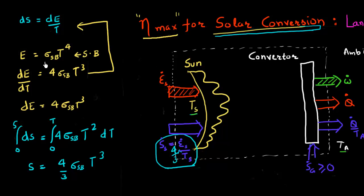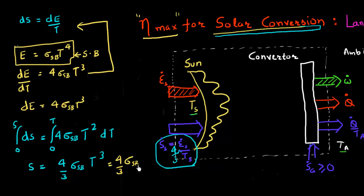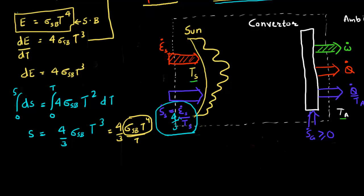Now I can relate it back to the energy. I know that the energy is E = σT⁴. Plugging that back in, I can write the entropy as (4/3) times T⁴ divided by T, where that T⁴ term is nothing but the energy associated with that radiative flux. So my entropy is given by S = (4/3) E / T — with a factor of 4/3.